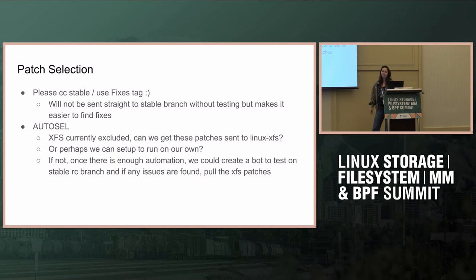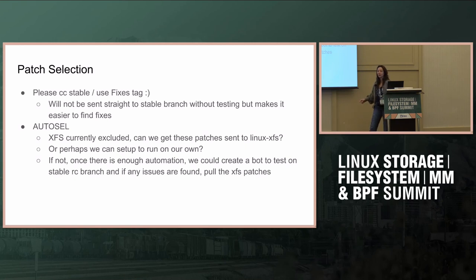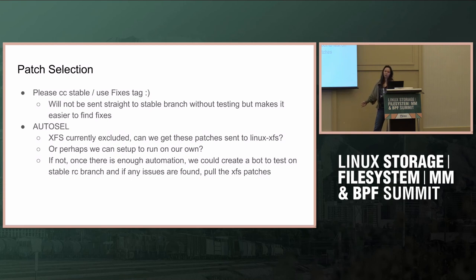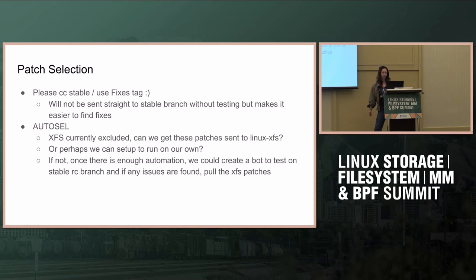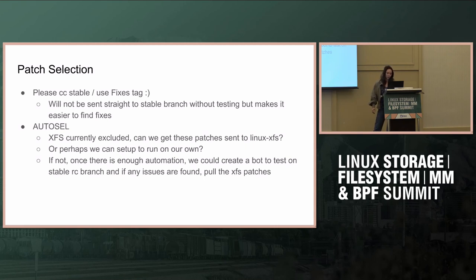Last year we talked a little about AutoCell. Right now XFS is excluded from AutoCell, but it would be great to at least get those patches forwarded to the linux-xfs list, or just sent to us somewhere so we can deal with them on our own time. If that's not feasible, we could set up AutoCell to run ourselves if we can get access to it. Or we could try to create a bot to run on the stable RC branch — that's an okay idea, but I don't know how many patches we'd have to start pulling back because their issues aren't applicable. It could be annoying but it's something to look into.